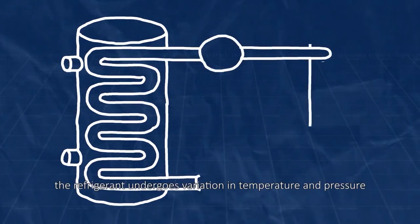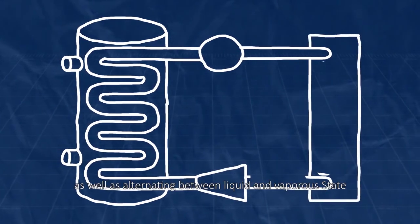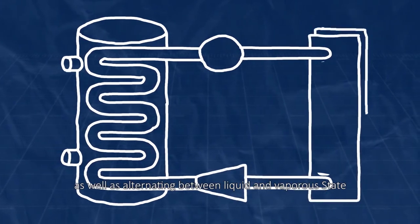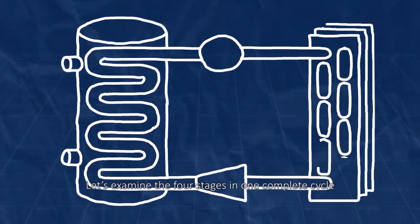As it cycles through the system, the refrigerant undergoes variations in temperature and pressure, as well as alternating between liquid and vaporous states. Let's examine the four stages in one complete cycle.